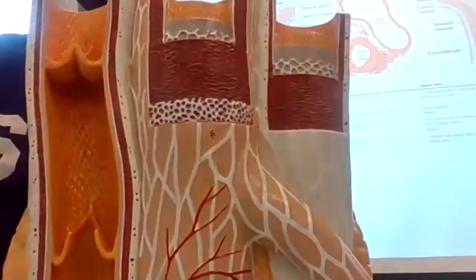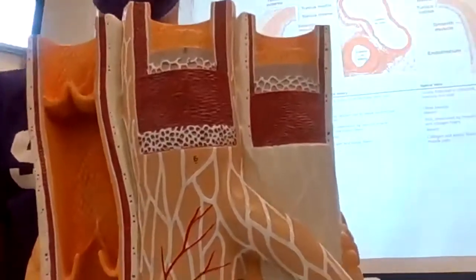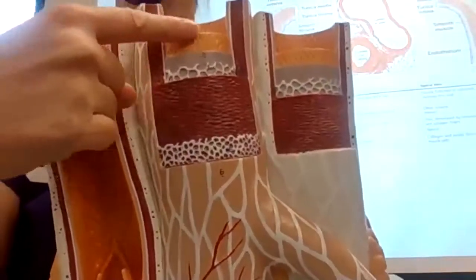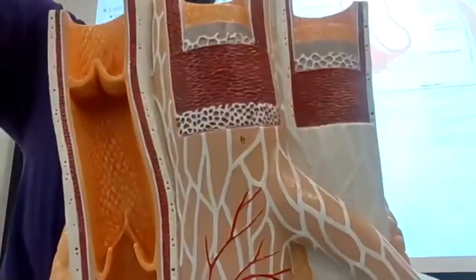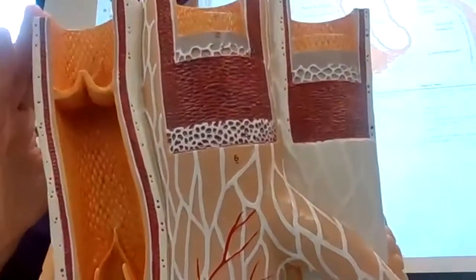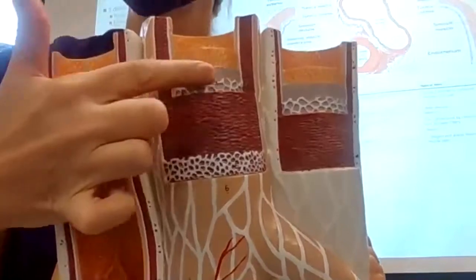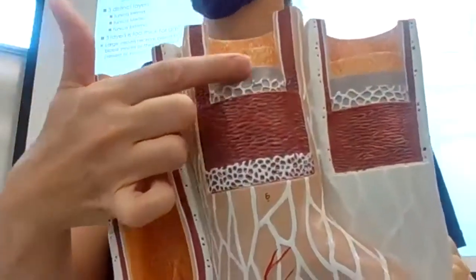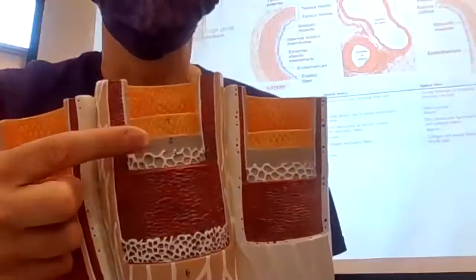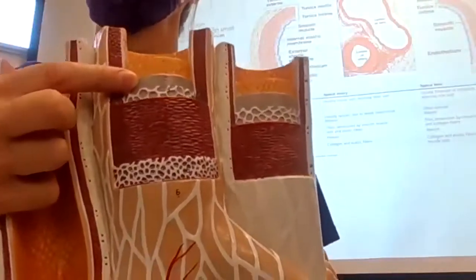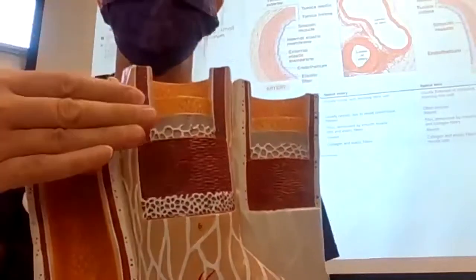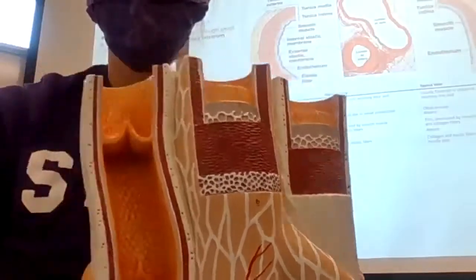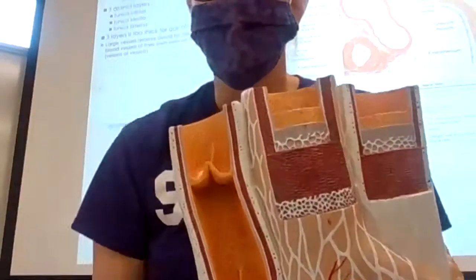So when you look at this model, the tunica intima layer is going to have, just like in the endocardium, simple squamous epithelium, the endothelial layer that is consistent through the entire circulatory system. And behind it shown in gray here is going to be that areolar connective tissue, capillaries and fibroblasts and fibrocytes and immune cells. And randomly you can get adipocytes and fat deposits in there. Now that's the tunica intima, and it's going to blend in eventually when you're in the heart to the endocardial layer.